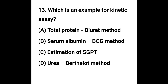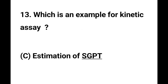Question number 13. Which is an example for kinetic assay? Option A - Total protein biuret method, Option B - Serum albumin by BCG method, Option C - Estimation of SGPT, Option D - Urea by Berthelot method. The correct answer is estimation of SGPT. SGPT estimation is a kinetic assay.